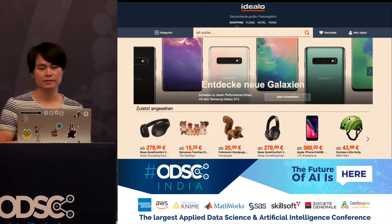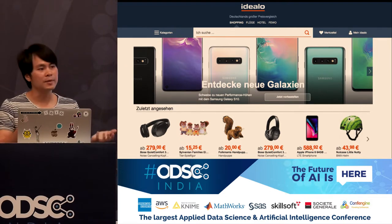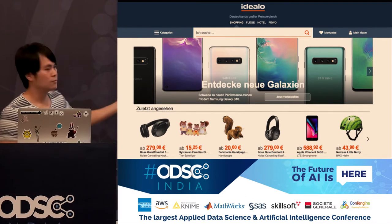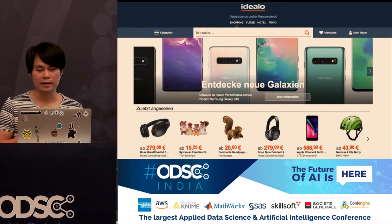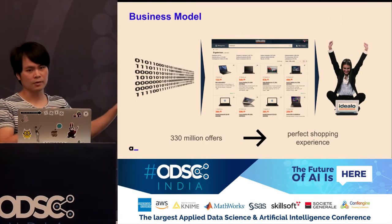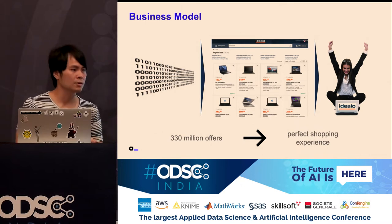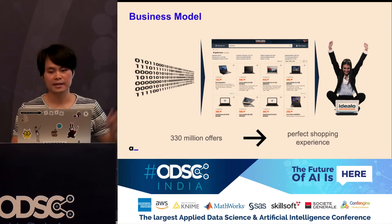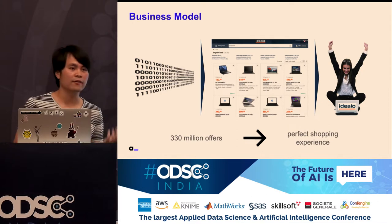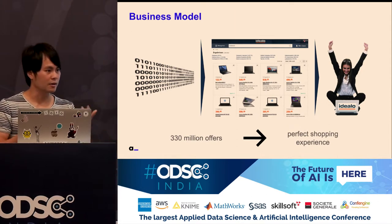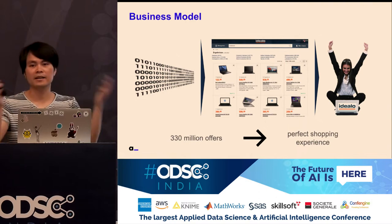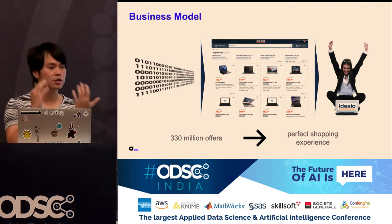Idealo is a typical e-commerce or price comparison website. You come there looking for a product, you search for something, especially when you want to go shopping. The company is 18 years old and has 800 people. The business model is very simple: shops like Amazon send their shopping data to our website, and overall we have 330 million offers. We then present that to end customers who just want a perfect shopping experience.